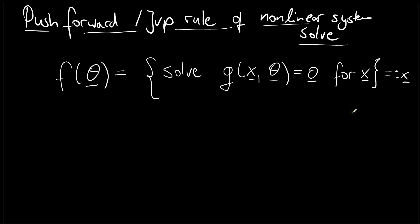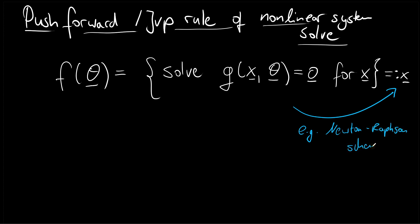The way we solve these equations is typically with the Newton-Raphson scheme. The Newton-Raphson scheme is quite a complicated algorithm, but we don't want to delve into its details — we just assume that this function works. There are difficulties such as multiple roots or non-converging solvers, but we assume here that the solution always converges.